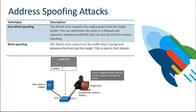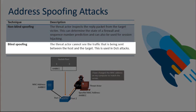Lastly, we have address spoofing attacks themselves. This is where we commonly see non-blind and blind spoofing. Blind spoofing is the easiest to talk about — this is where a threat actor can't see the traffic being sent between a host device and the target. In blind spoofing, the threat actor tries to manipulate and utilize MAC addresses for their own denial-of-service purposes.